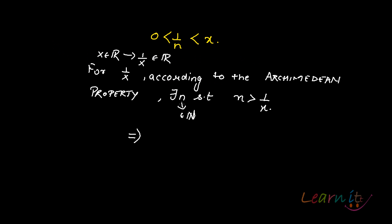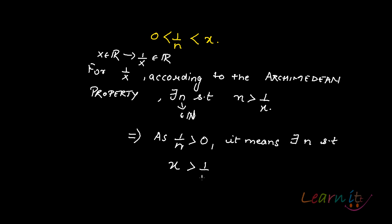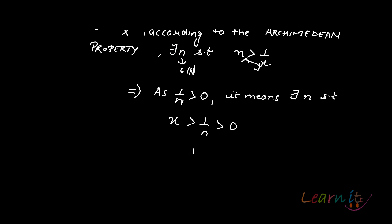So what does that give us? Since 1/N is greater than 0 — because we are talking about natural numbers — this implies that x is greater than 1/N. So x goes here and N comes here, meaning x is greater than 1/N, and 1/N is greater than 0. As a result, 1/N is less than x and greater than 0, and we have proved what we wanted to.